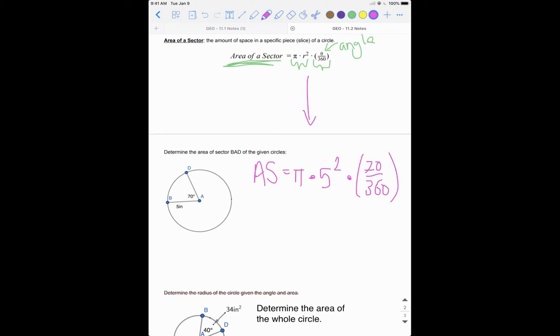Make sure you plug it in just like this. So if you plug it in just like this, you should get π times 25 times 70 divided by 360.